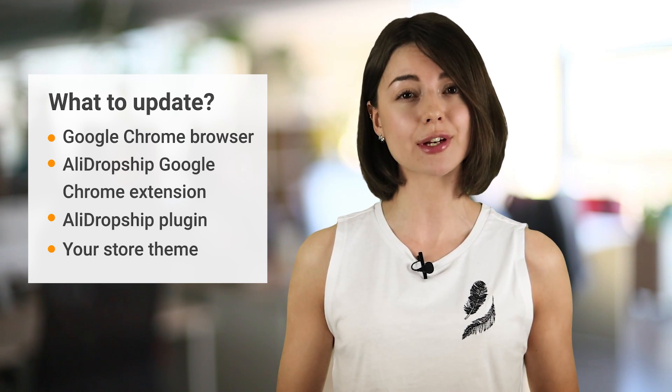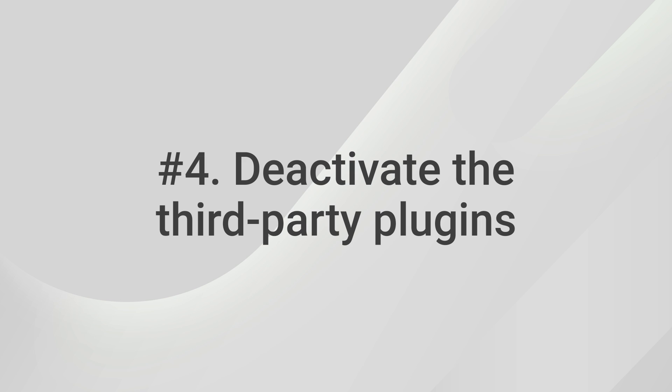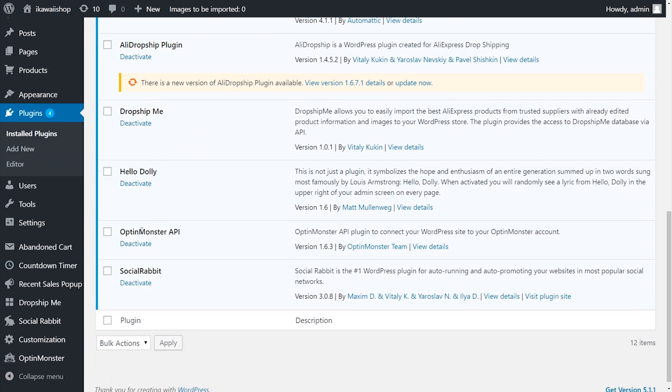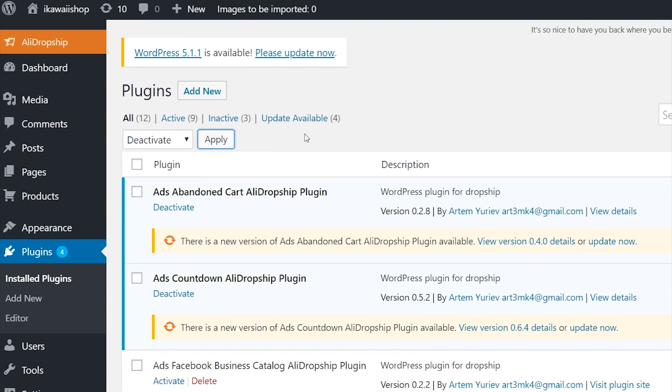You'll find the links to get these updates in the description. What else can cause an error? Third-party plugins, especially security solutions like Wordfence or cache plugins like Auto-Optimize, may cause the extension to work incorrectly. So if you have any of them installed on your website, it's a good idea to turn them off while you are importing products from AliExpress. To do this, simply go to your WordPress admin area, select the Plugins tab, and deactivate all third-party plugins.